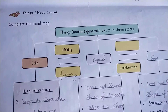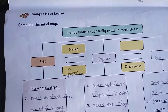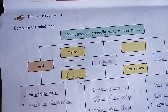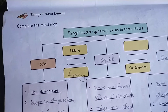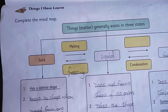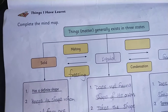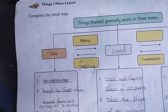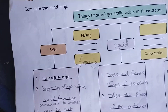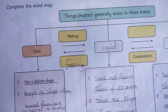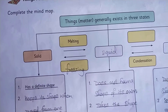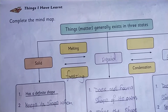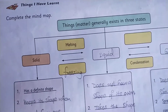Good morning children. We have completed our sixth lesson. Now we have to write in the studio mind map. Open studio page number 95. Here we are having a mind map, and today we will complete this.